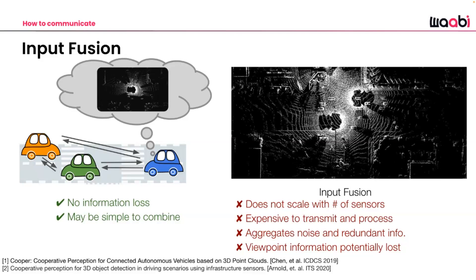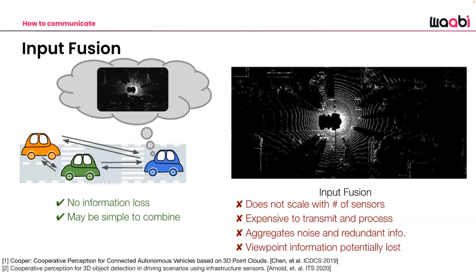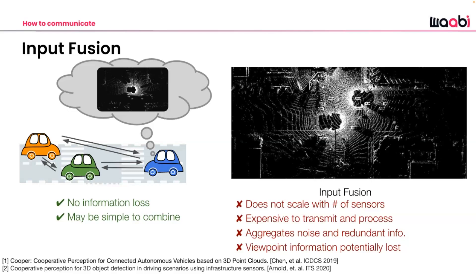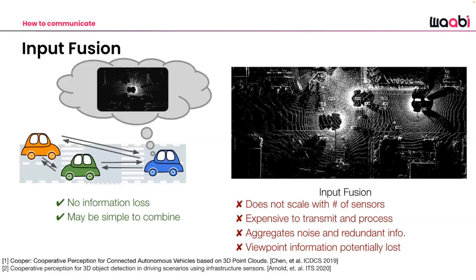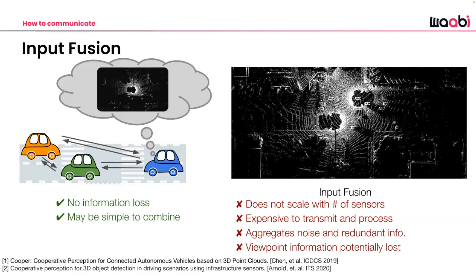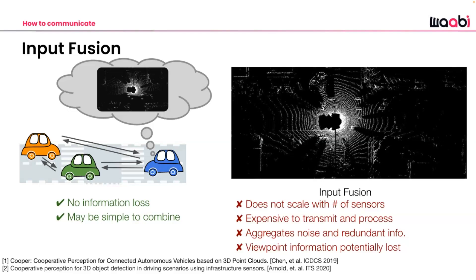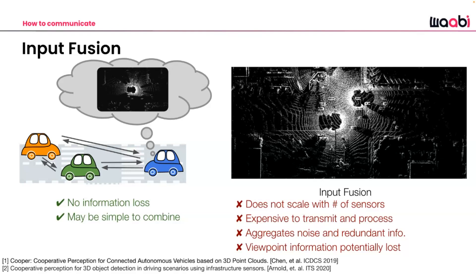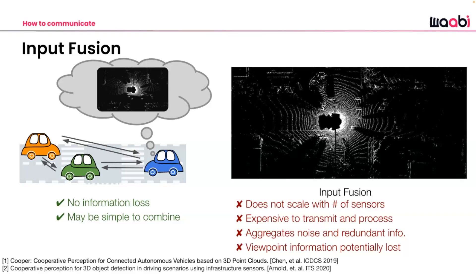Even with sparse representations, processing surrounding scene data is expensive. Transmitting everything is not feasible given how complex multi-sensor setups have become, with many cameras and lidars. Another downside: transmitting raw data doesn't encode uncertainty. For example, sending a point cloud directly into a shared coordinate frame doesn't convey that points far from the sensor are more uncertain than nearby points.